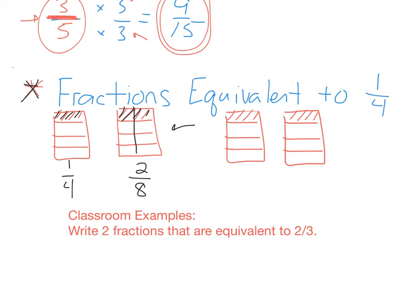When I split each piece of this into two pieces, what I really did was do this. I multiplied the numerator and denominator by the same number. And 1 times 2 equals 2. And 4 times 2 equals 8. So one-fourth is equivalent to two-eighths.